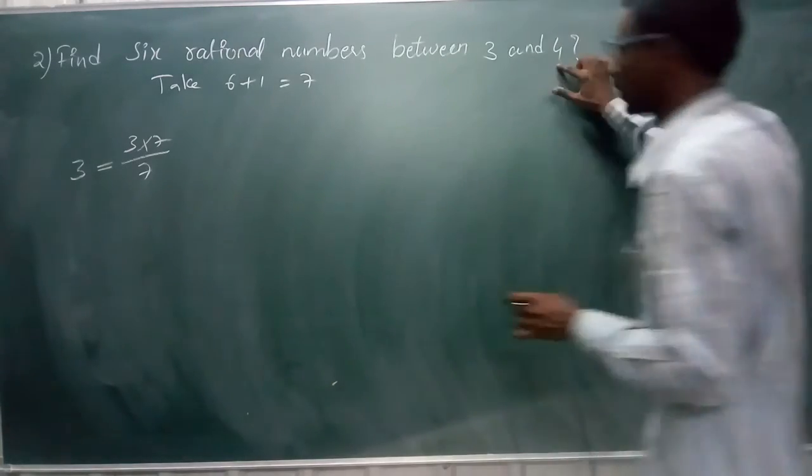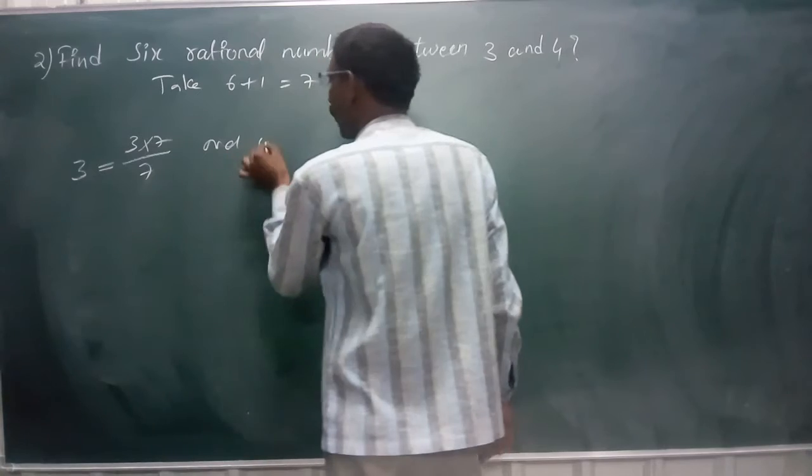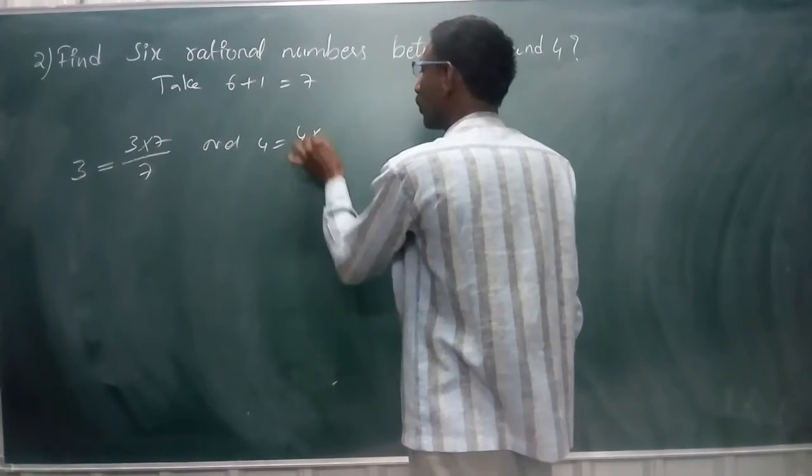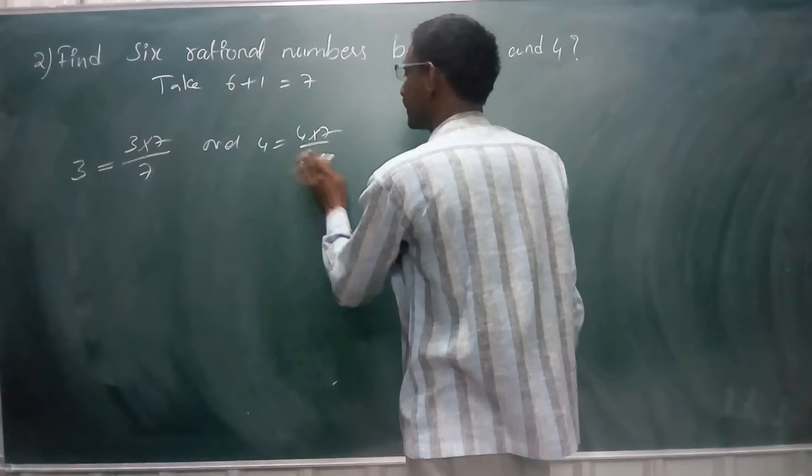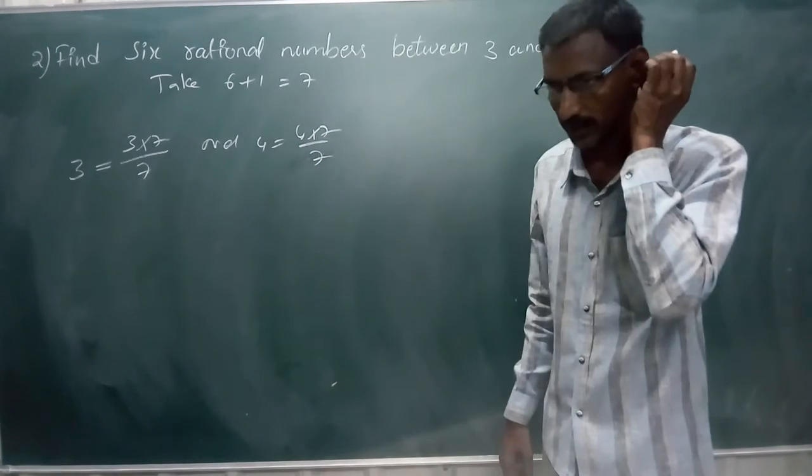Again, what is the next one? 4. Take 4, again multiply and divide by 7. So 4 into 7 by 7. Seven and seven get cancelled, again we get 4. That's all.